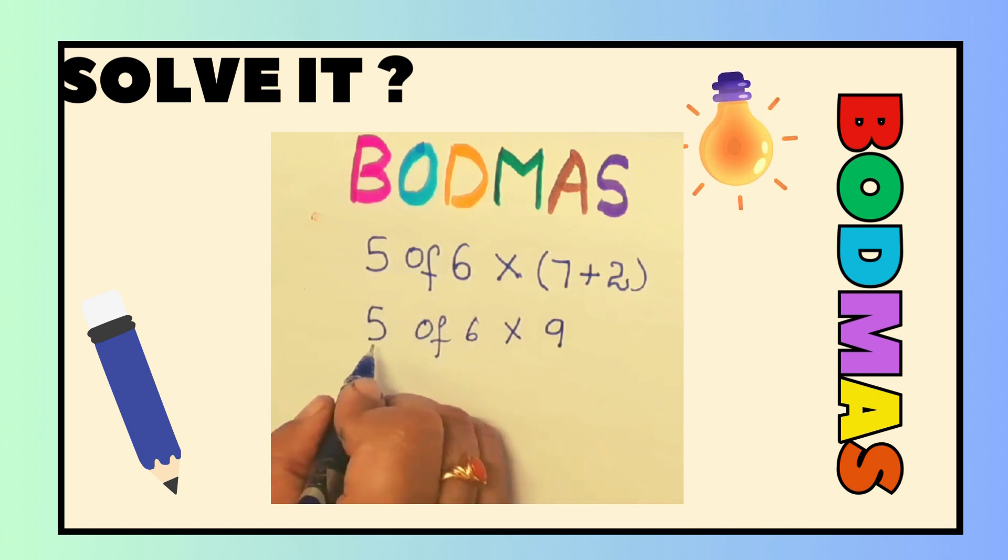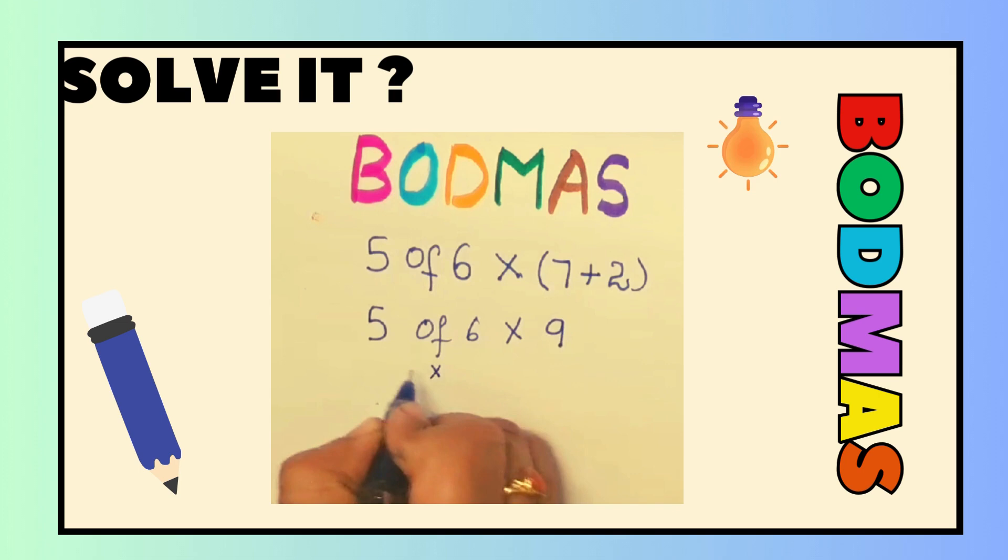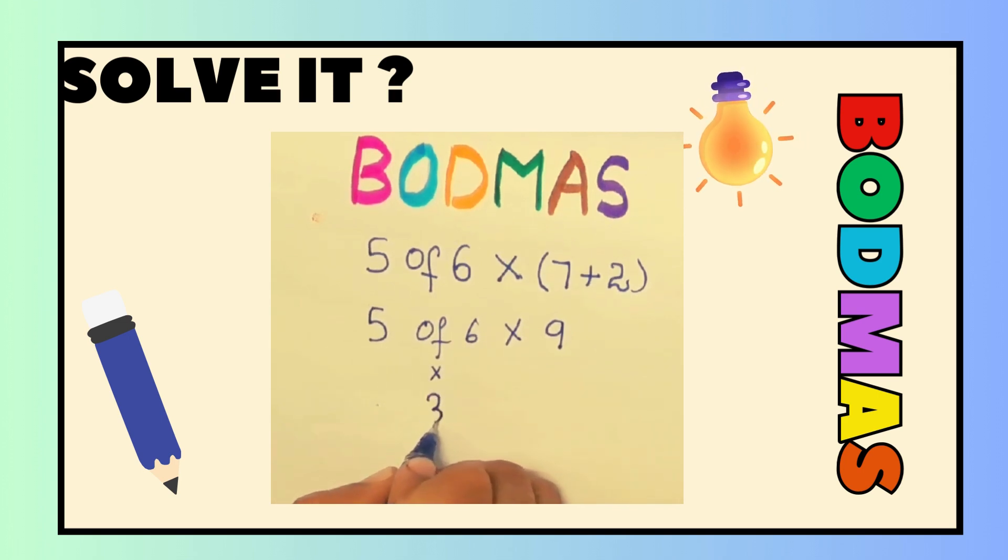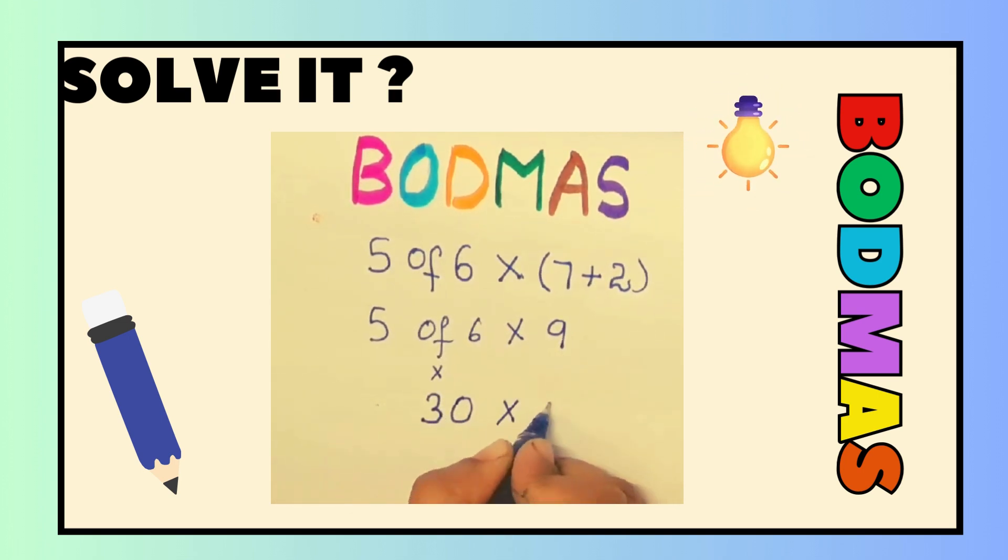In this, I have of. So 5 of 6 means 5 into 6. 5 times 6 is 30 into 9.